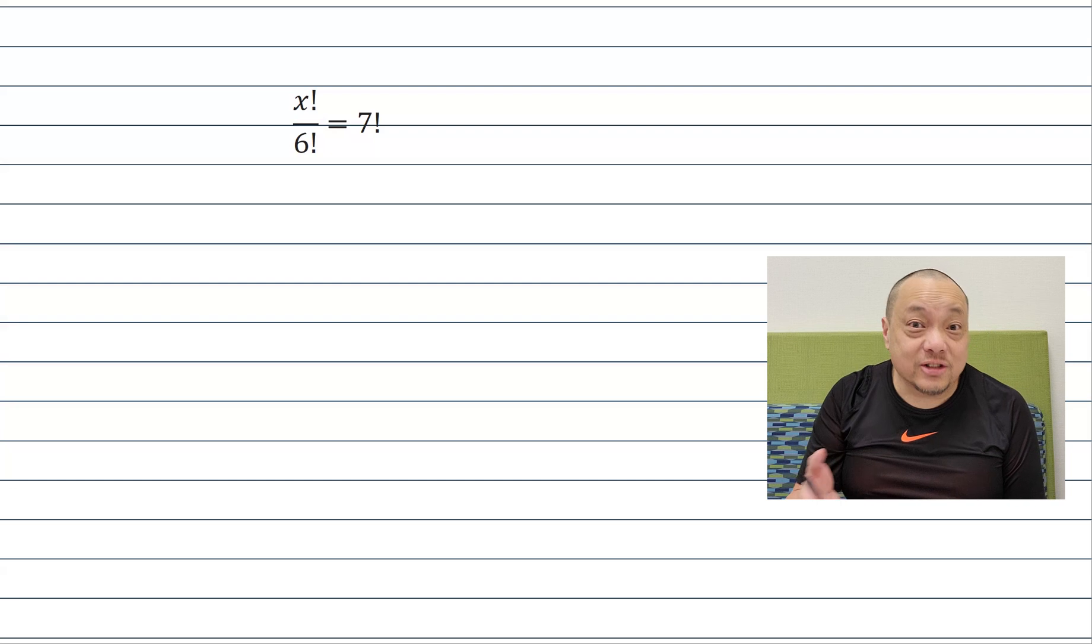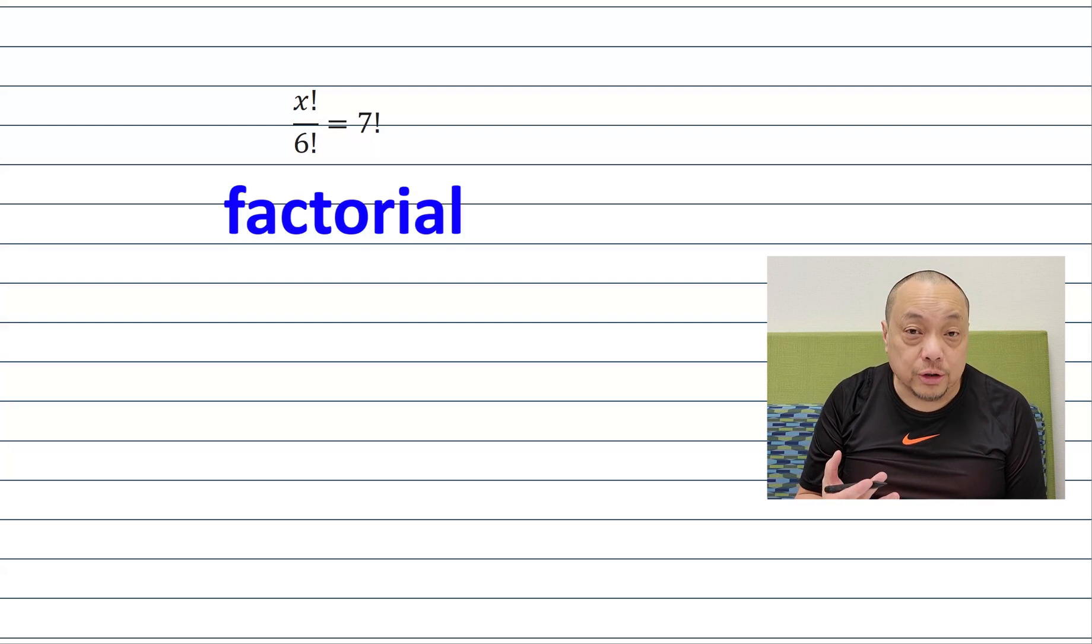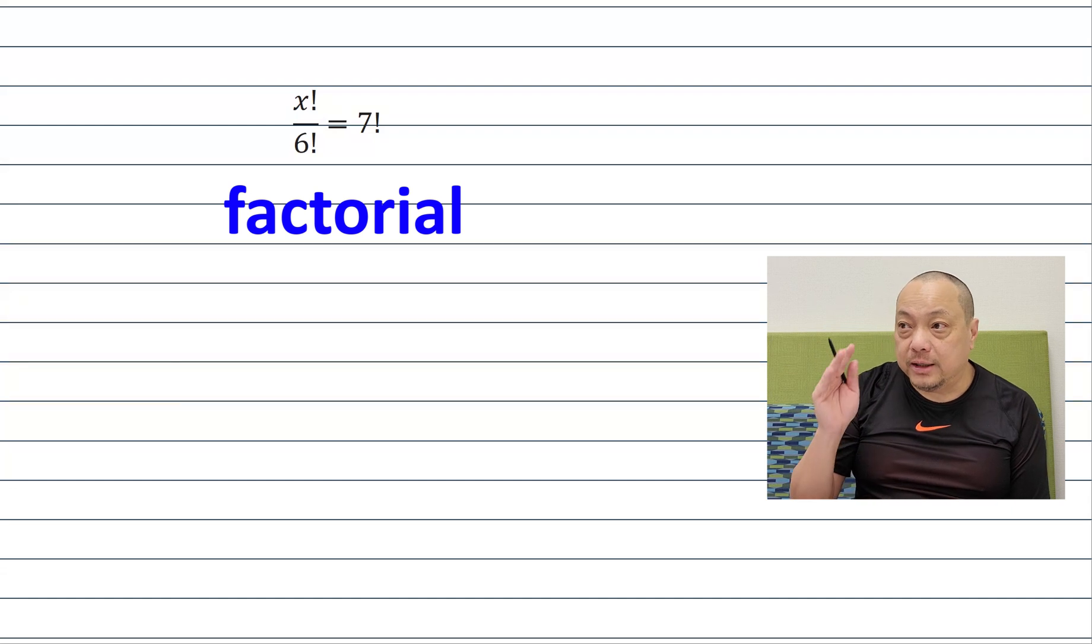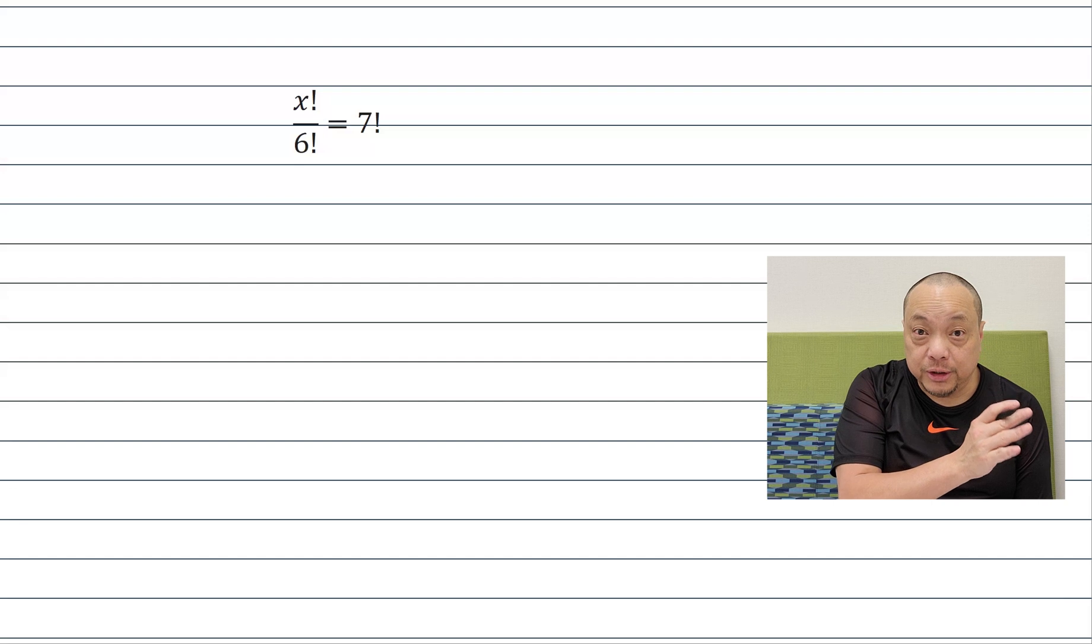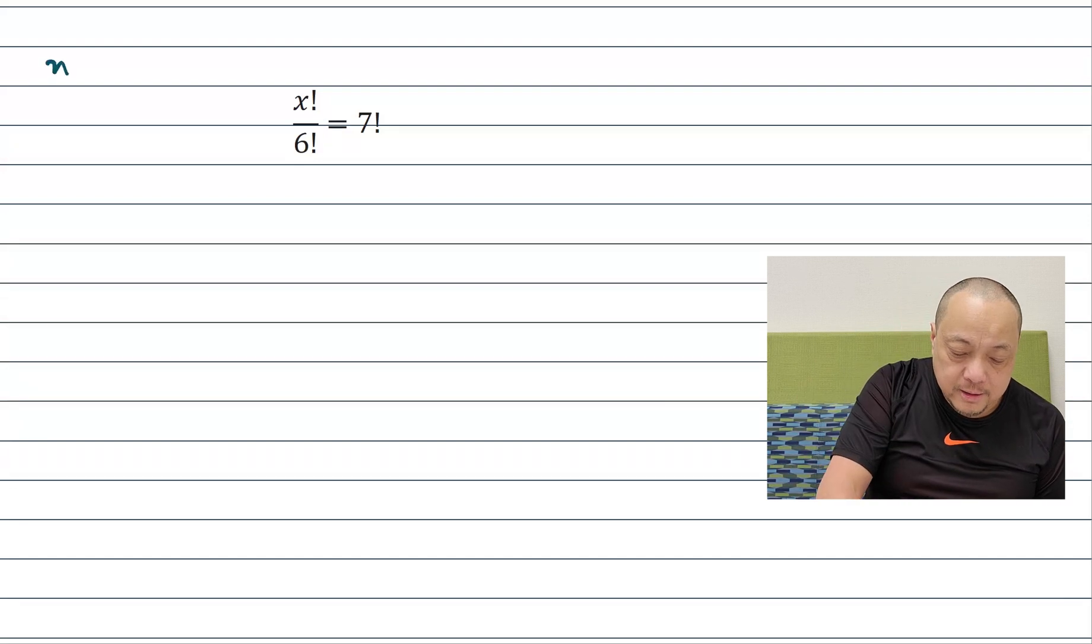First let me explain that exclamation mark. The exclamation mark pronounces factorial and it means you take numbers from 1 to 3 all the way up to that number x and then you multiply. n factorial is equal to 1 times 2 times all the way up to n.